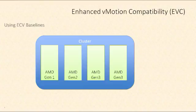Here we see a cluster of ESXi hosts and they're all AMD hosts — this is a cluster that's a good candidate for EVC. When we configure EVC, we'll choose a baseline, and all the hosts in that cluster will present the feature set of that baseline.